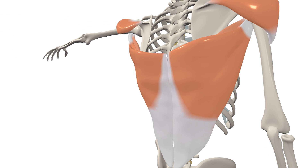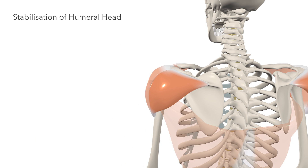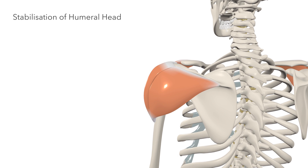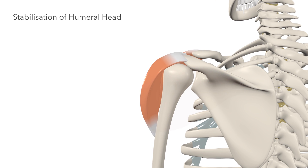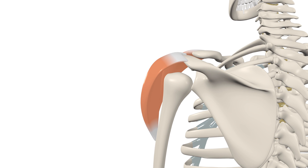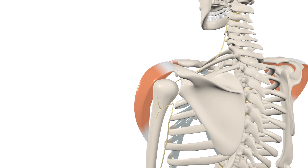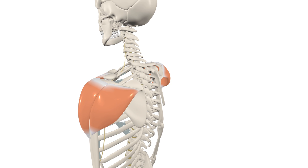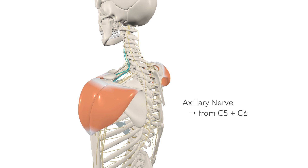The other key action of the deltoid is stabilisation of the head of the humerus. For example, when we're carrying a heavy load, it holds the humeral head in place, stopping it from dislocating inferiorly. And dislocation of the humeral head can cause damage to the axillary nerve. This is the nerve which innervates the deltoid, and damage to this nerve can lead to paralysis of the deltoid muscle. The deltoid is innervated by the axillary nerve, which is formed by the fifth and sixth cervical nerves.